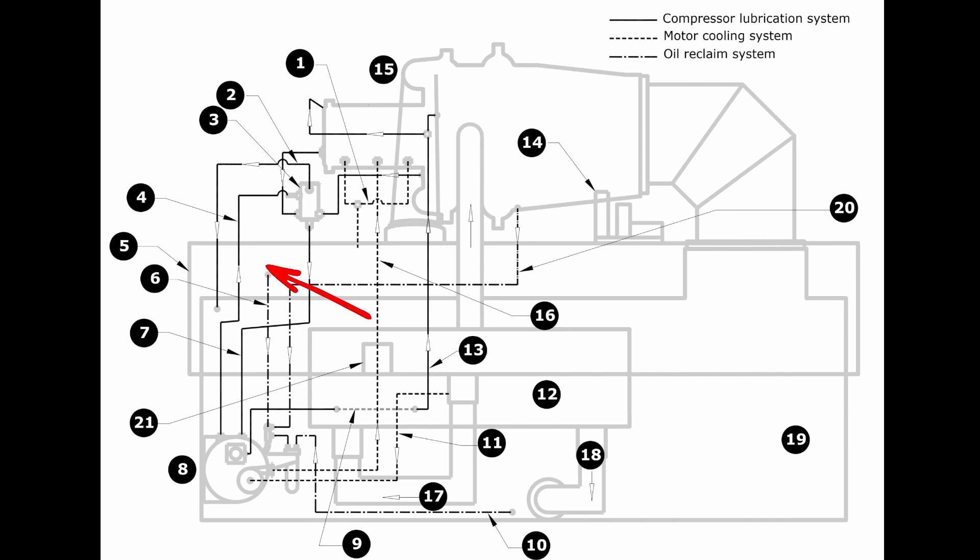Then we will have a high pressure condenser gas line that flows from the condenser into this block. That high pressure condenser gas flows through a nozzle assembly which creates a venturi effect, which is basically just a siphoning effect.